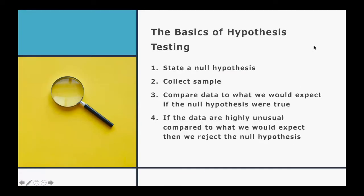Let's return then to our basic steps in the hypothesis testing framework. We've already stated the null, and in previous videos we've talked about how we might collect a statistical sample. So the next thing we want to do is compare the data in the sample to what we would expect to find if the null hypothesis were true. We can then use that comparison to determine whether the data are really unusual compared to what we would expect if the null were true, and if so, we would reject the null hypothesis and accept the alternate.